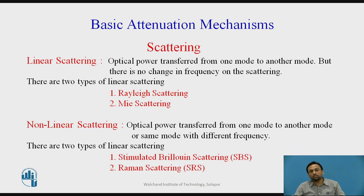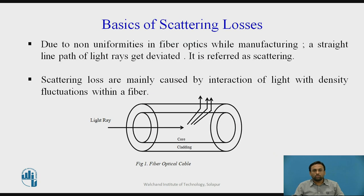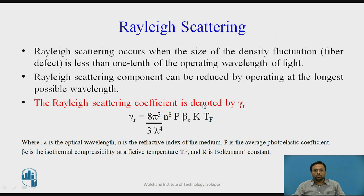In this lecture, we will discuss Rayleigh, Mie, SBS, and SRS in detail. Rayleigh scattering occurs when the size of the density fluctuation is less than one-tenth of the operating wavelength of the light. As seen in the figure, when the size of the density fluctuation is below this threshold, light scatters in that pattern. Rayleigh scattering can be reduced by operating at the longest possible wavelength, since attenuation decreases as wavelength increases.